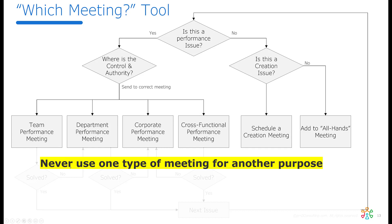A couple of important things to note. Number one — this is super important — never use one type of meeting for another purpose. For example, if you're in an OKR performance meeting and someone says 'that's the wrong KR' or 'I have a better key result,' that's a creation issue. Don't deal with it in that meeting. Performance meetings are focused on performance issues — that's what people prepared for, that's what they're ready to discuss, and the right people for a creation discussion may not even be in the room.